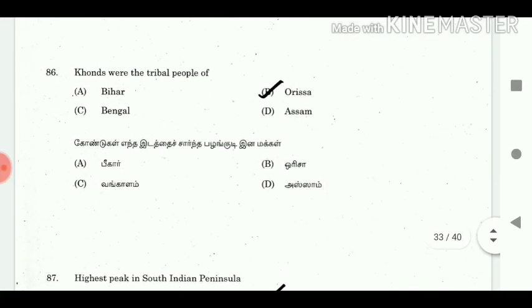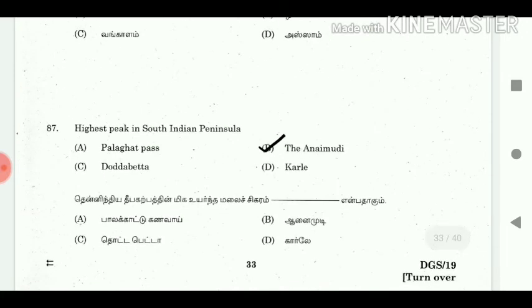86. Khonds were the tribal people of? Answer: Orissa. 87. Highest peak in South Indian Peninsula? Answer: Anamudi.